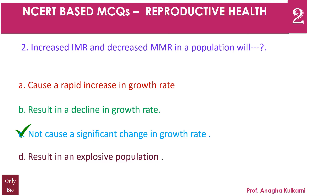Option A is ruled out. Option B — result in a decline in the growth rate — is also incorrect, since IMR and MMR are inversely proportional; considering one of them, there will be no change in the population growth rate. Option C — increased IMR and decreased MMR will not cause any significant change in the growth rate as they are inversely proportional — is the right answer. Option D is also incorrect. The correct answer is C.